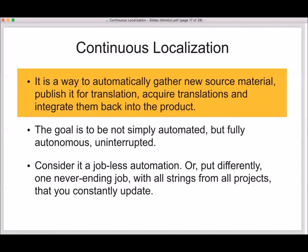There's no single or official definition of continuous localization, and many companies that talk about it mean slightly different things. The way I understand it is that continuous localization is a way to automatically gather all new source material, publish it for translation, acquire the translations, and integrate them back into the product. The main idea — the main goal — is not to be simply automated, but fully autonomous and to have an uninterrupted workflow. You can consider continuous localization as automation that has no jobs, or think of it as one never-ending job that has all the projects, all the files, and all the strings at all times — a job that you constantly update.